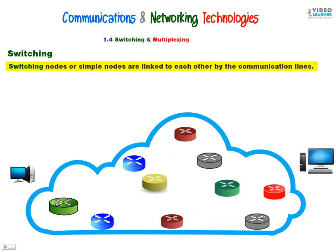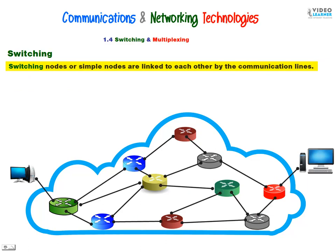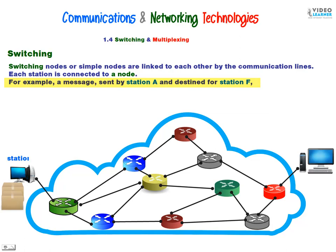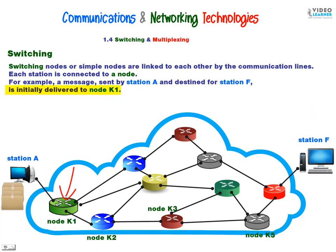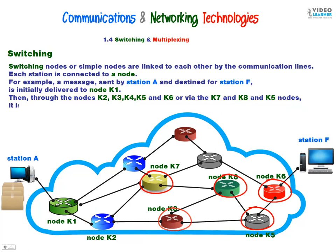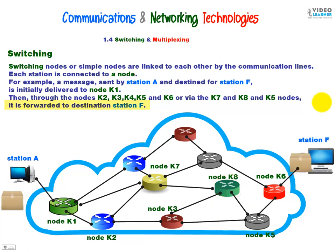Switching nodes are linked to each other by communication lines. Each station is connected to a node. For example, a message sent by station A and designated for station F is initially delivered to node K1. After that it will take its route — through nodes K2, K3, K4, K5, and K6, or via K7, K8, and K5 nodes, it is forwarded to destination station F. So here are the two possible routes.